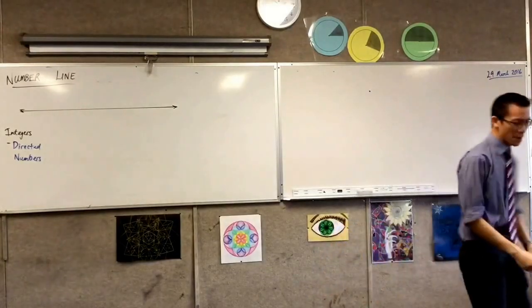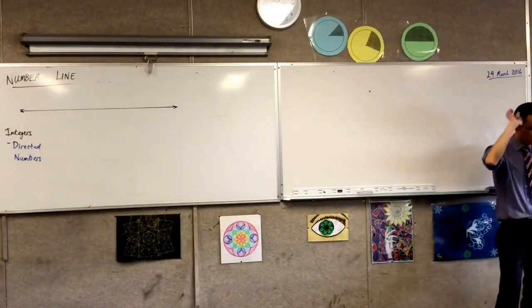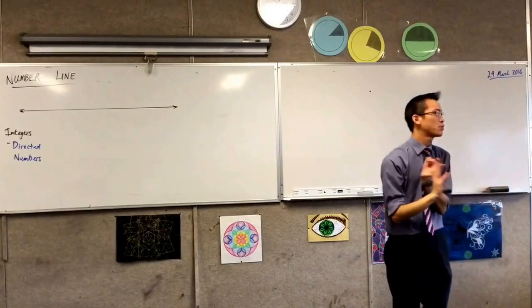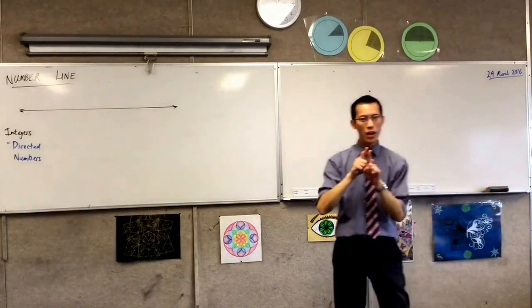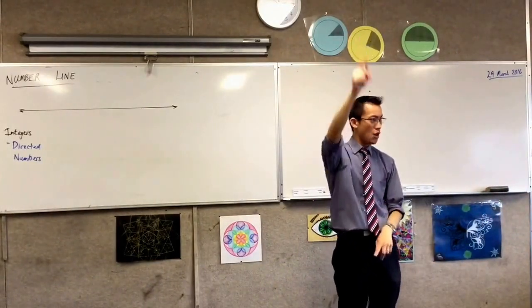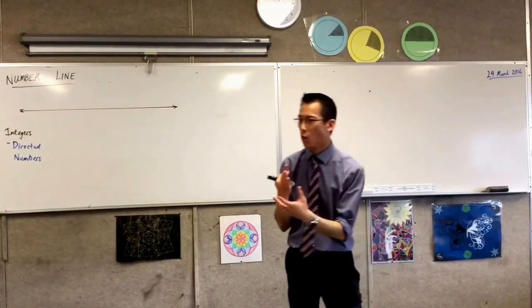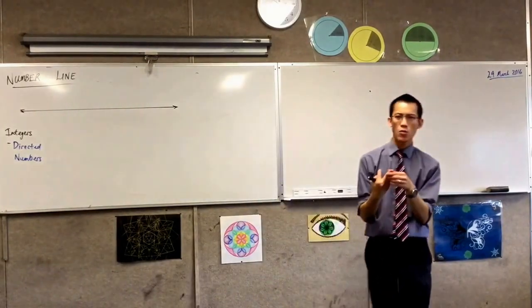The idea of directed number is super, super useful, okay? We already saw three quick examples this morning of where if your numbers have direction, you can describe things really accurately. What were those three examples from this morning? Do you remember what the three were?